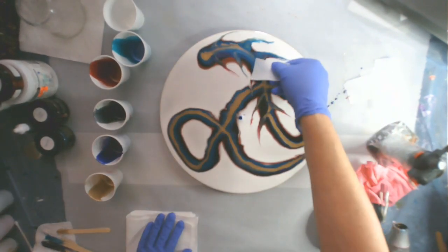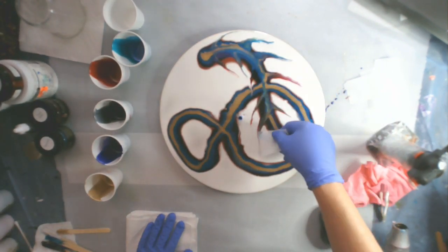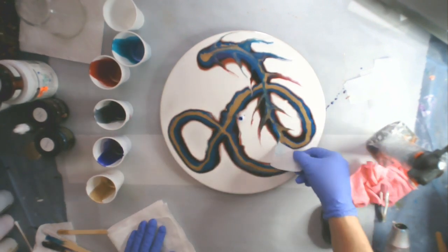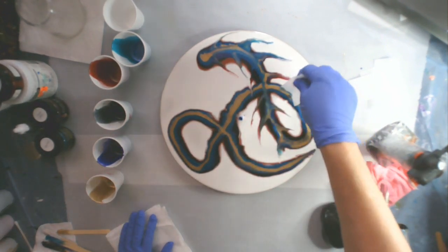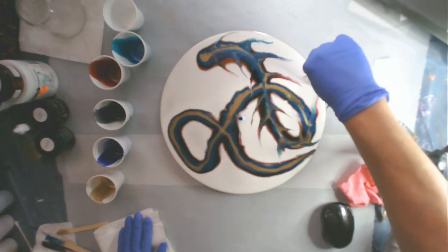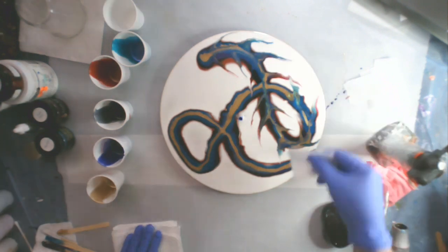So I want to blend some of it in. I still want the gold to be dominant. Like the backbone of this dragon. But I still want to be able to see some of those other colors.